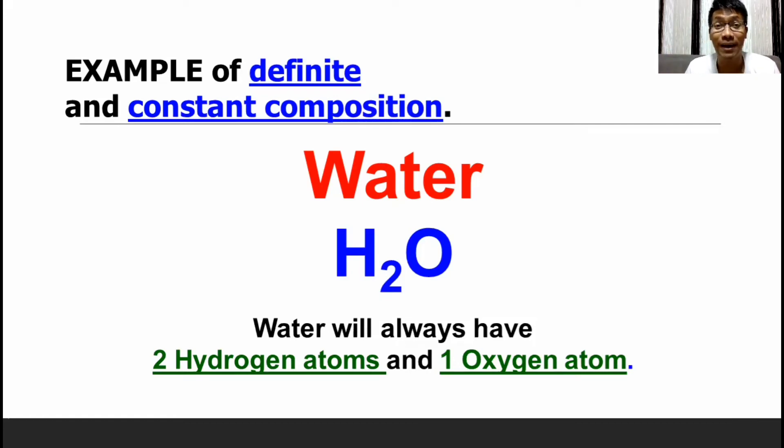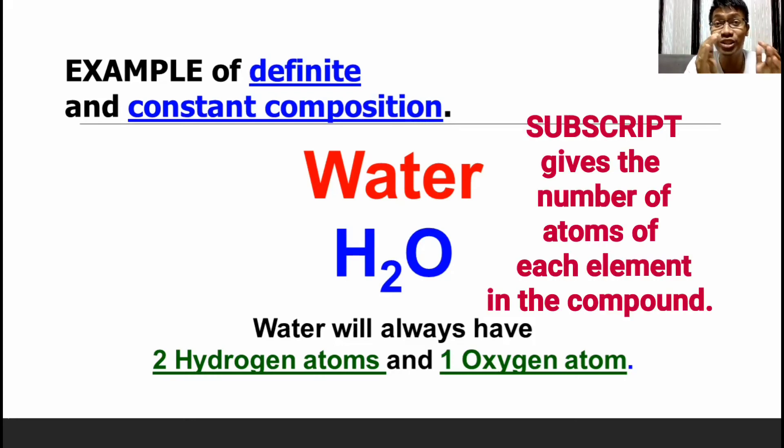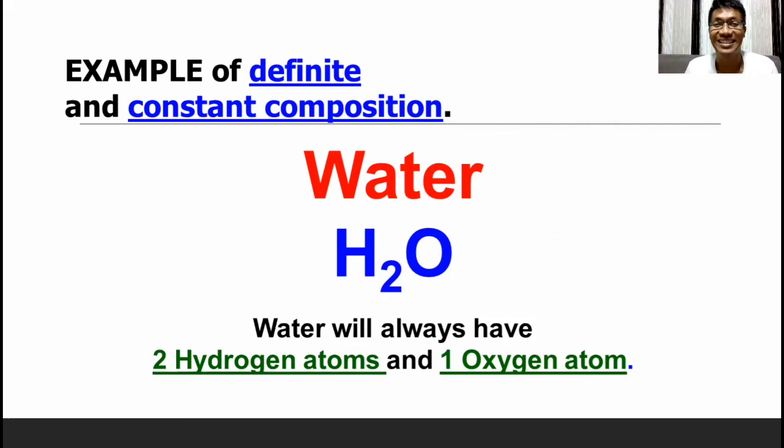Every compound has a chemical formula. And each chemical formula would give us some details about this compound. The first one is the elements present in that compound. Second, the number of each element present in that compound. Lastly, we could have a detail of the total number of atoms making or composing that particular compound.